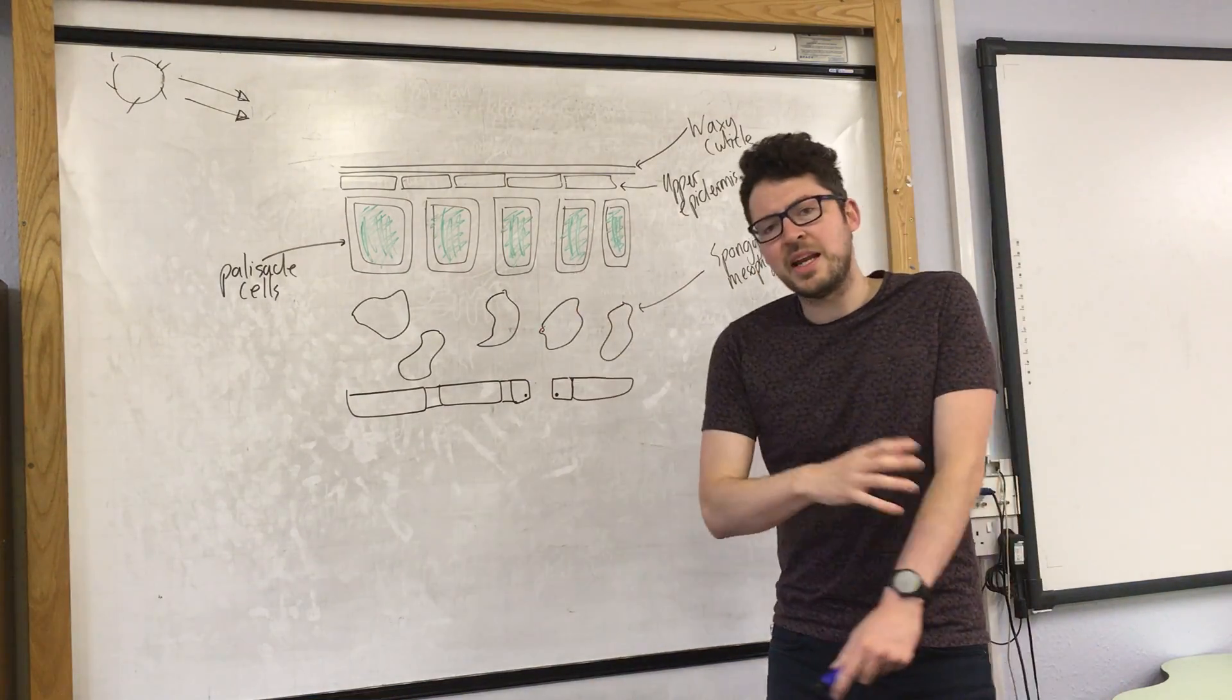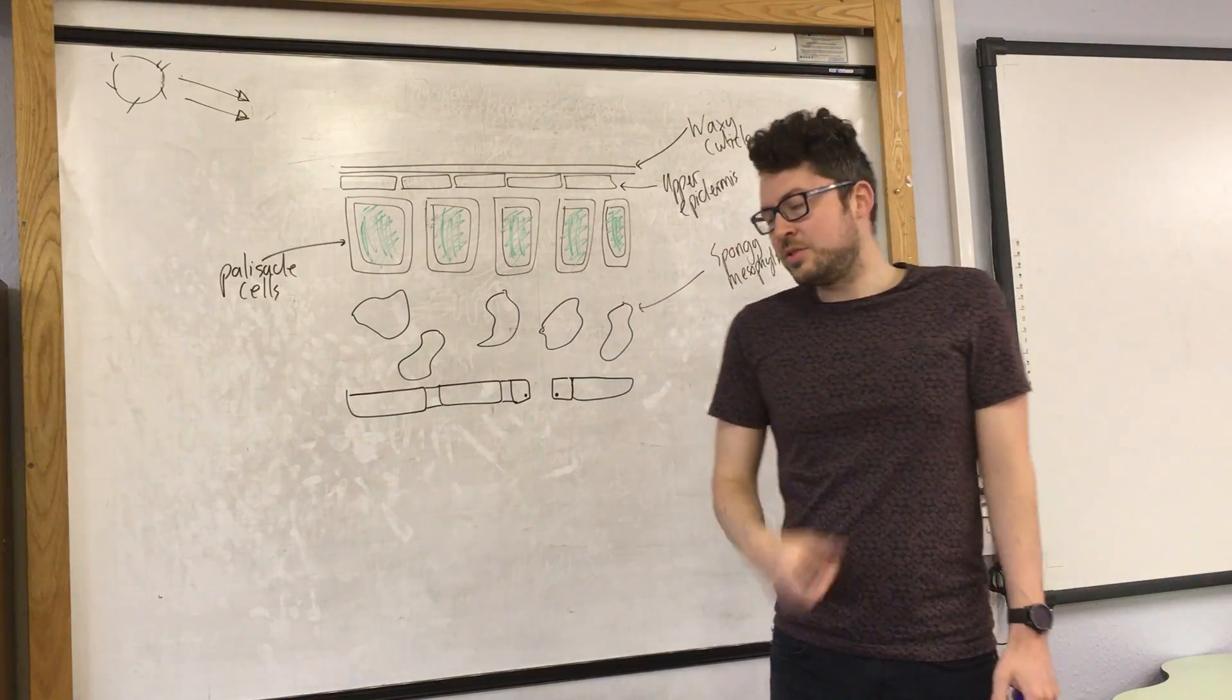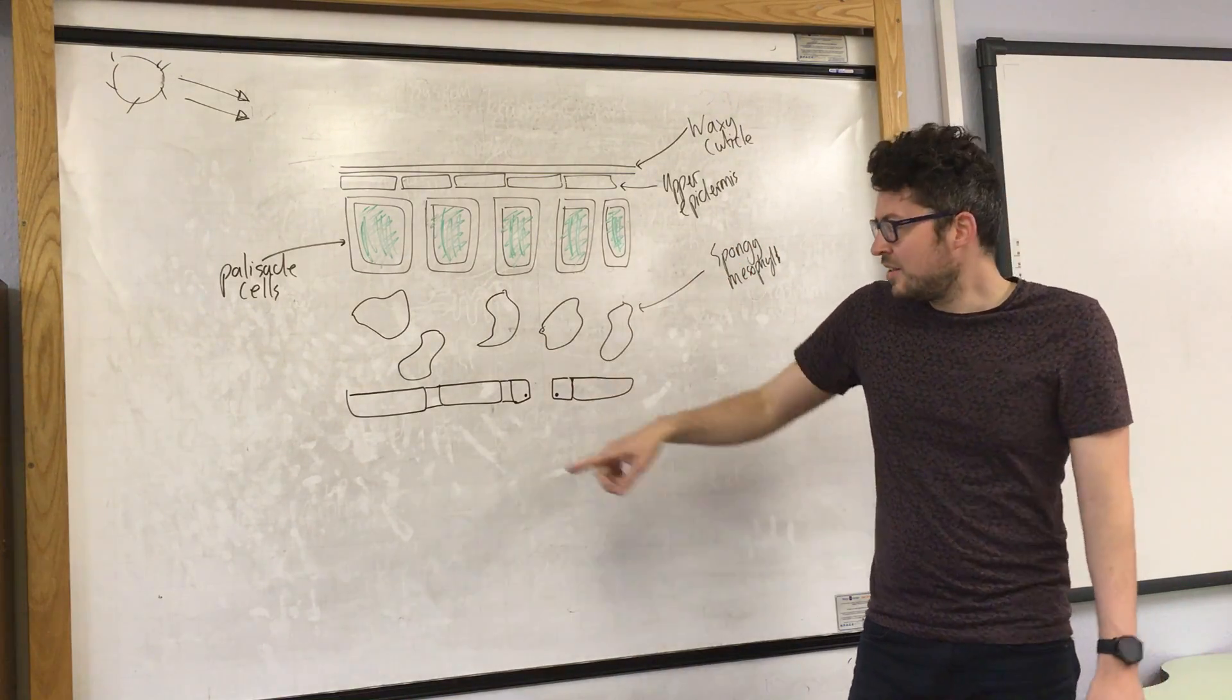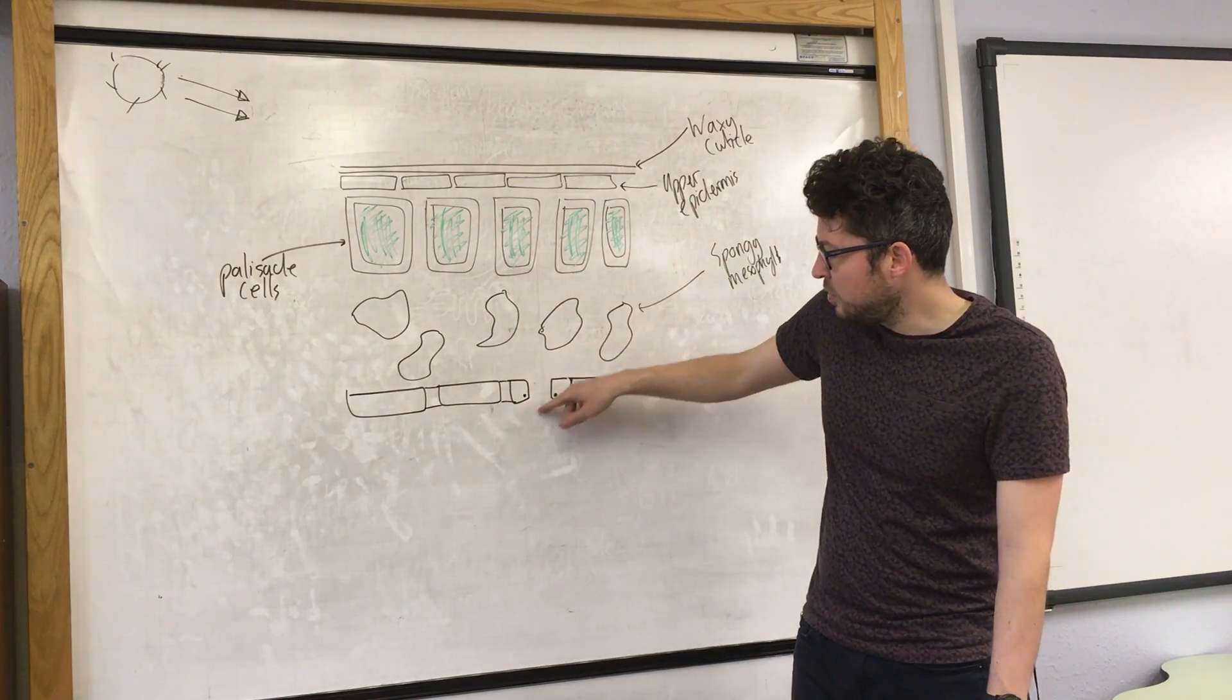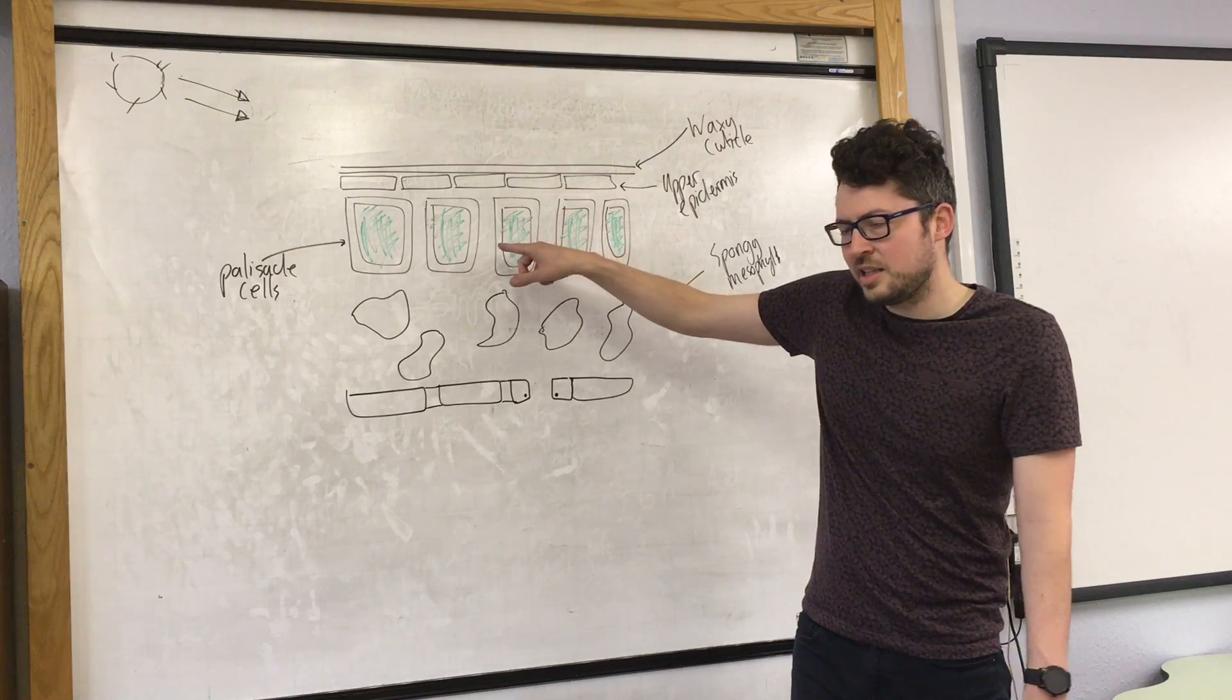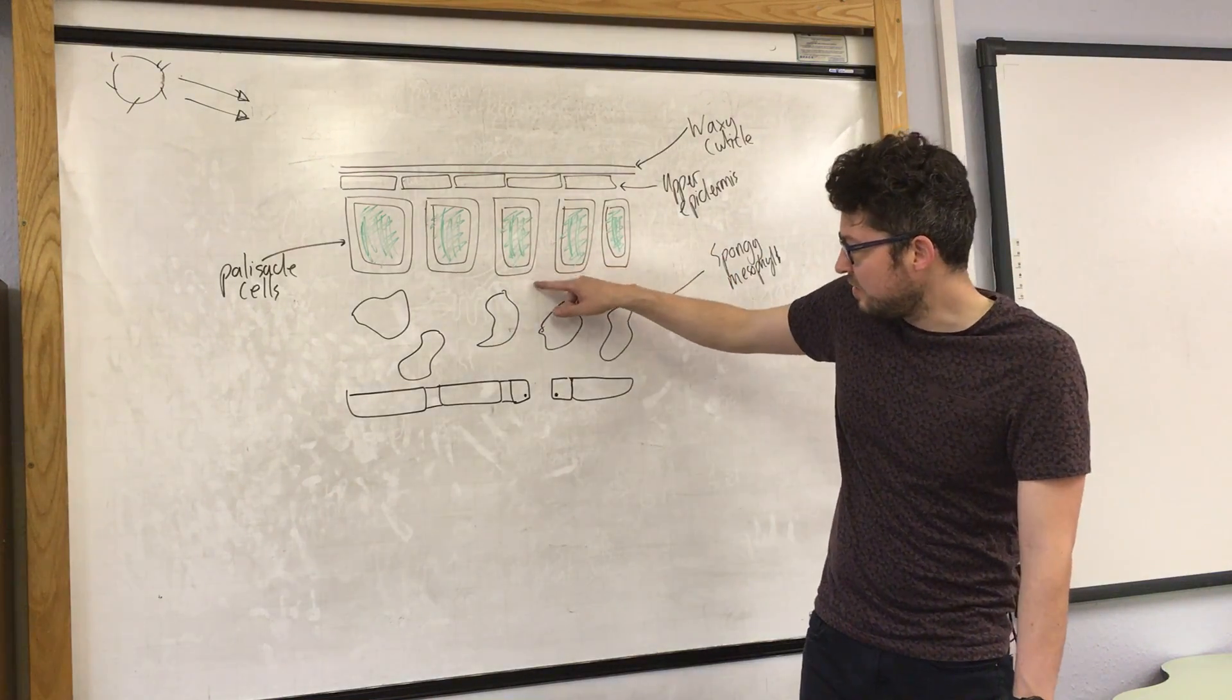The reason it has many air spaces is because it needs to allow gases to diffuse in and out. For photosynthesis, the plant needs carbon dioxide, which diffuses in through to these palisade cells. Oxygen, which is produced in photosynthesis, diffuses out.